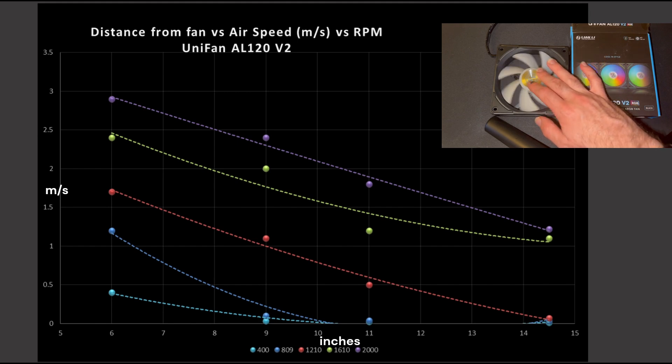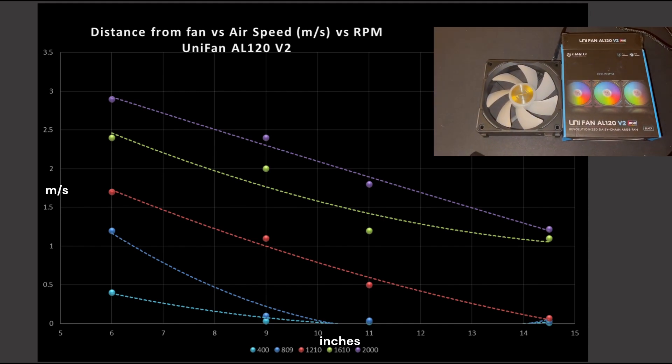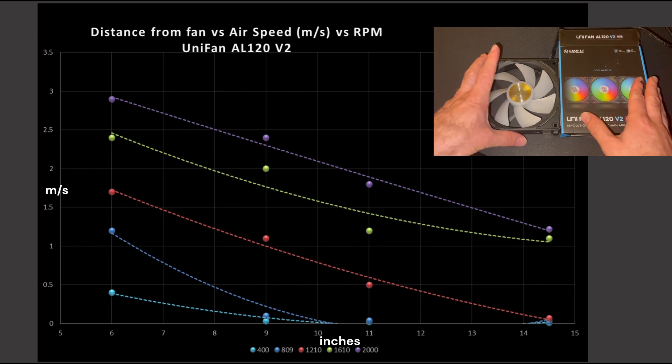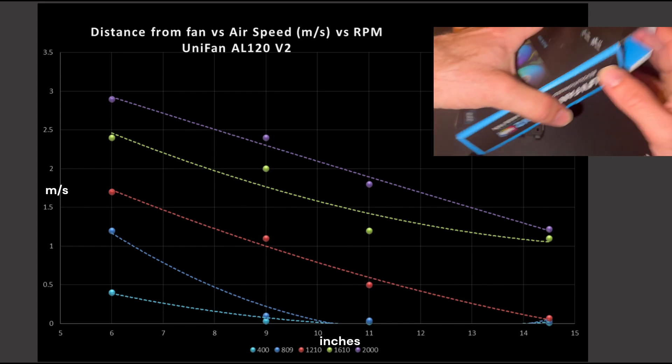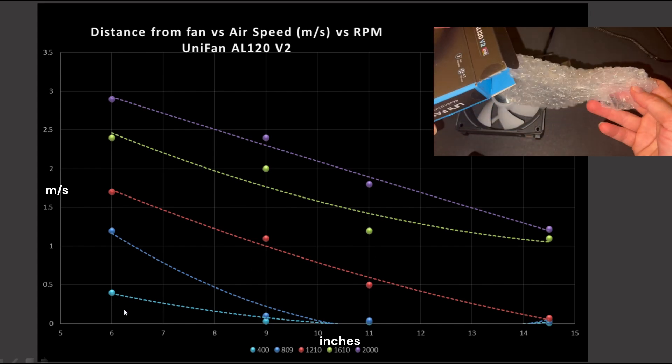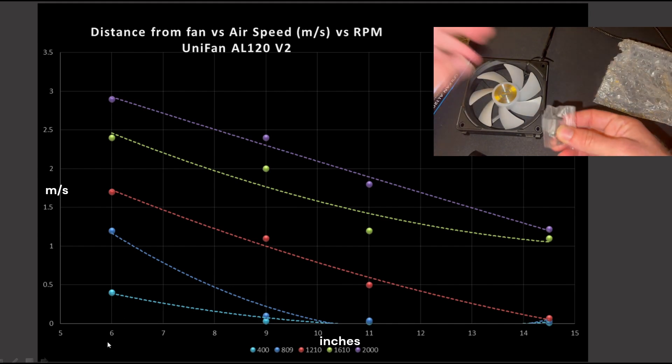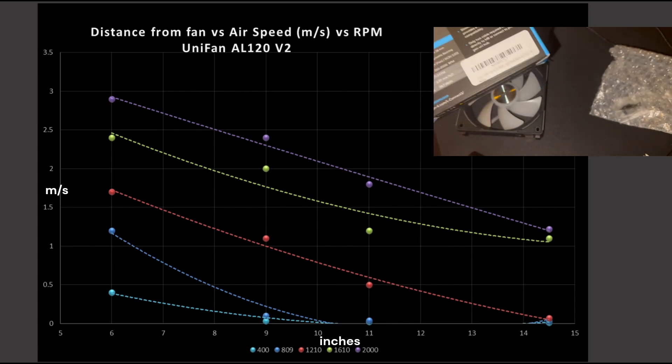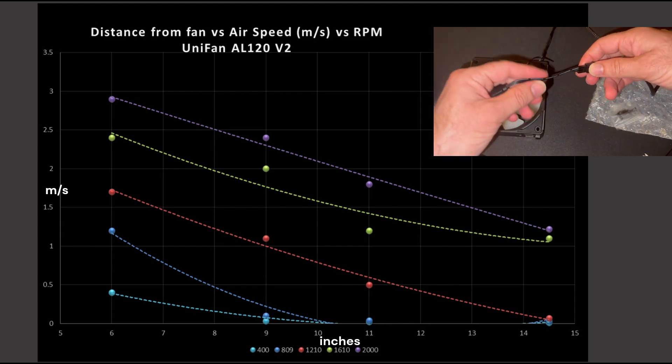First up is the case simulation test. The case simulation test can be looked at in a couple of key different ways, but the most important for you, the viewer, is what size case do you actually plan on buying. If you're looking at a small form factor or a very ultra-compact case, front-to-back airflow with a CPU air cooler, the 6-inch mark is your key location. The 6-inch mark also is very representative of a short throw distance, meaning if you've got a case fan blowing air up into your GPU, that 6-inch mark would be representative of that.